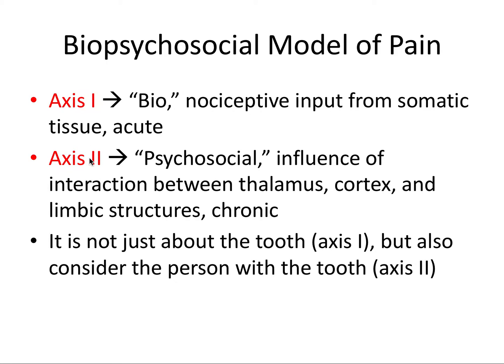Axis two refers to the psychosocial part of the word, and this involves an influence of interaction between the thalamus, the cortex, and the limbic structures. This is more characteristic of chronic pain. So as pain becomes chronic, these axis two factors tend to take over. Chronic pain is that which lasts generally longer than four to six months.